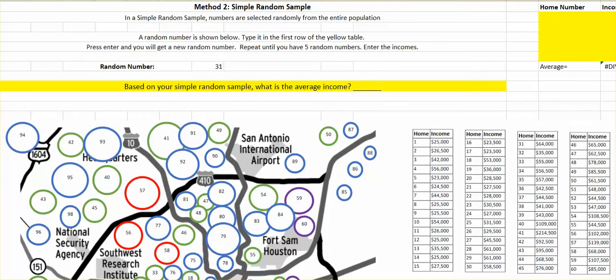We could also do a simple random sample. What that means is that we're just going to randomly pick a number from the entire population and use that house number. So I have this set up to generate random numbers. My first random number is 31. I'm going to put that in my home number.